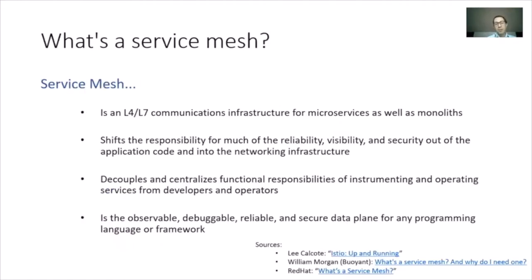Let's define a service mesh. I'll reference Lee Calcote's book on Istio Up and Running, William Morgan's article from Buoyant on what a service mesh is, and Red Hat's blog. To summarize: a service mesh is an L4 or L7 communications infrastructure for microservices as well as monoliths. A service mesh shifts the responsibility for reliability, visibility, and security out of the application code and into the networking infrastructure.